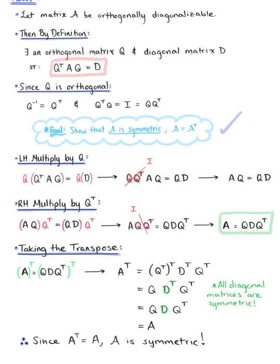So we have officially verified that if matrix A is orthogonally diagonalizable, then matrix A is symmetric, which completes our proof.